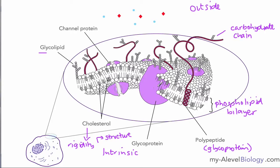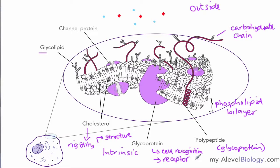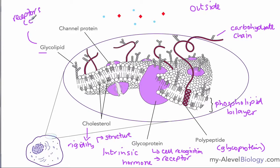The glycoprotein has a role in cell recognition — the way cells recognize each other — and it also acts as a receptor, providing a point where other molecules that need to target or attach to the cell can do so. An example of a molecule that might attach here is a hormone. Glycolipids have a similar role, also acting as receptors but for different types of molecules — one example is cholera toxins, which we'll look at later. Both glycolipids and glycoproteins have a carbohydrate chain attached.